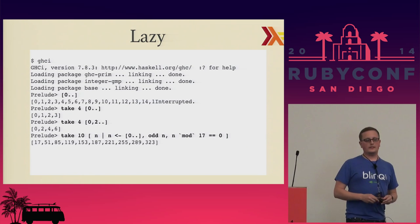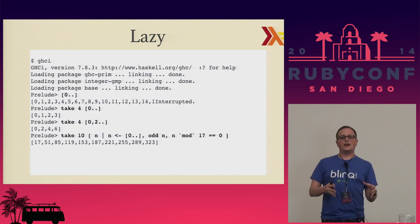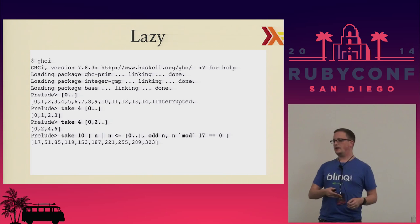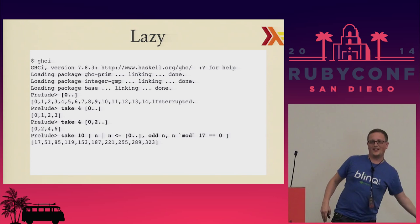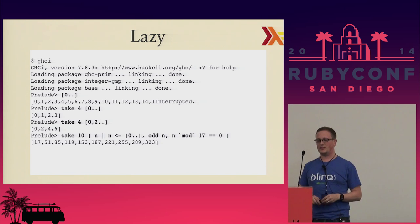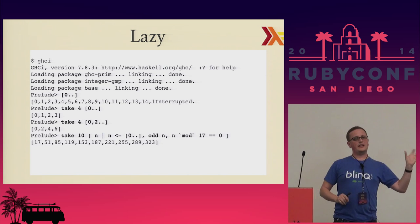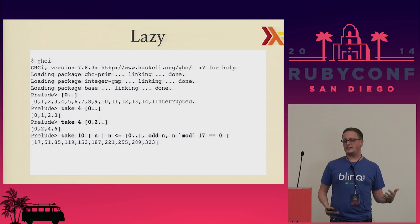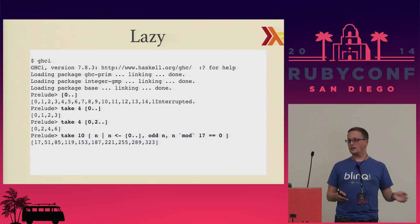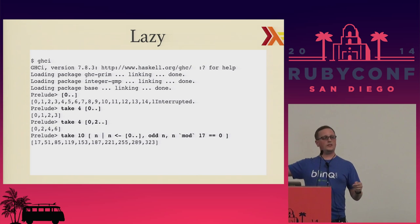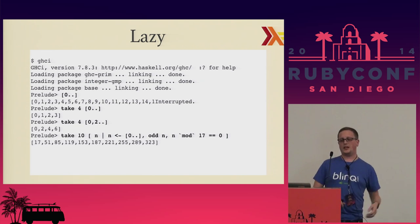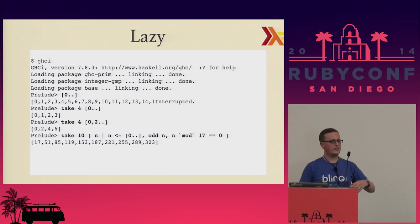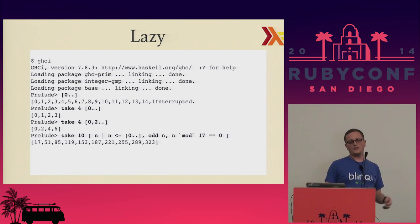Haskell is also a lazy language - it will only evaluate as much as it absolutely has to to get you the right answer. You can happily define an infinite list - 0..infinity - and Haskell will just spit out values forever until you hit Control-C. There's a function 'take' which takes n elements from some list. Because Haskell is lazy, you can take four elements from the infinite list and get just the first four, or take four elements from the list of all even numbers, or define iteration systems and list comprehensions to generate arbitrary infinite lists of useful values.